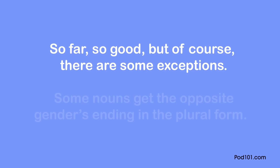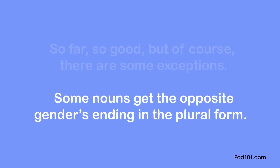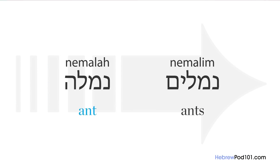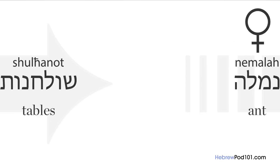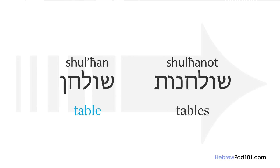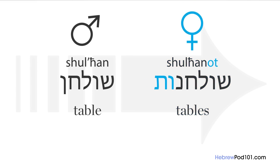Of course, there are some exceptions. Some nouns get the opposite gender ending in the plural form. For example, 'ant' in Hebrew is 'nemala' — it ends in 'hay' and is feminine, but in the plural it takes the masculine ending: 'nemalim' — ants. Another example is 'table' — 'shulchan' — which is masculine, but in the plural it takes the feminine ending: 'shulchanot' — tables.